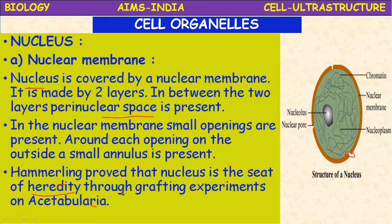Hammerling conducted grafting experiments on Acetabularia, the largest algae, and proved that the nucleus is the seat of heredity. The chromatin material present in the nucleus is made up of DNA and chromosomes, which is why the nucleus is considered the seat of heredity.